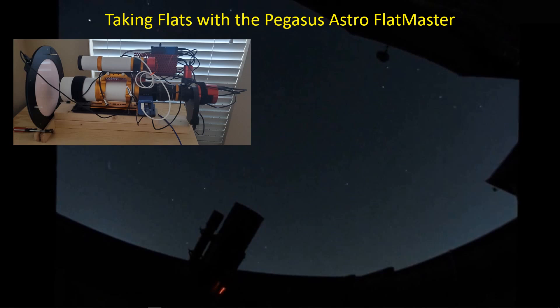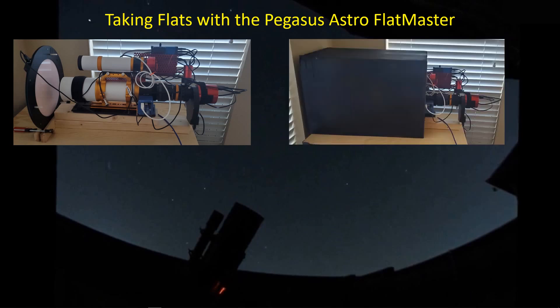So I like to take the flats inside and under repeatable conditions, so I place the telescope on a couple of 2x4s to line up the optical axis of the telescope with the center of the Flatmaster. Then I put a box over that to cut out most of the external light because I want to be able to take flats both during the day and during the night.